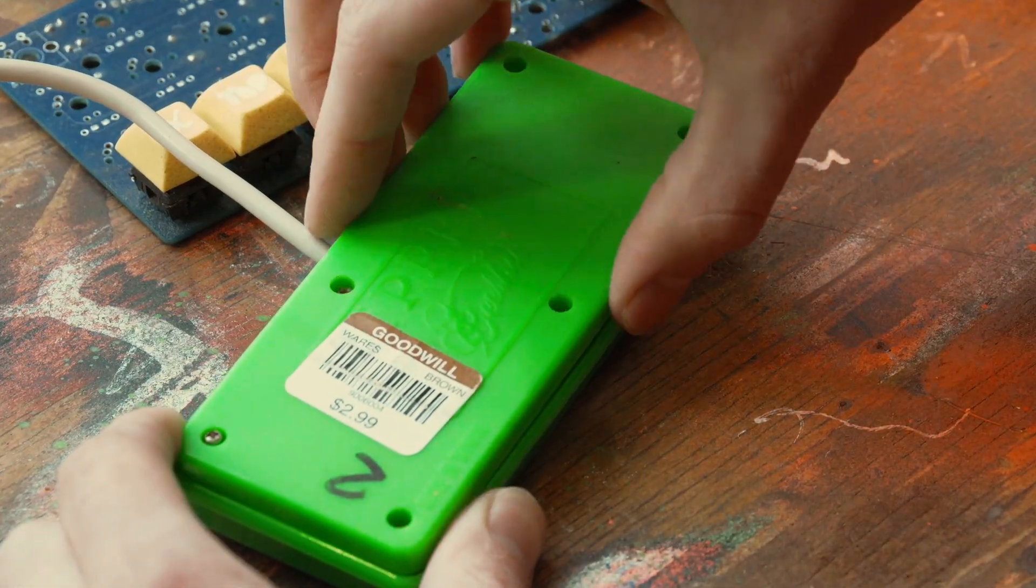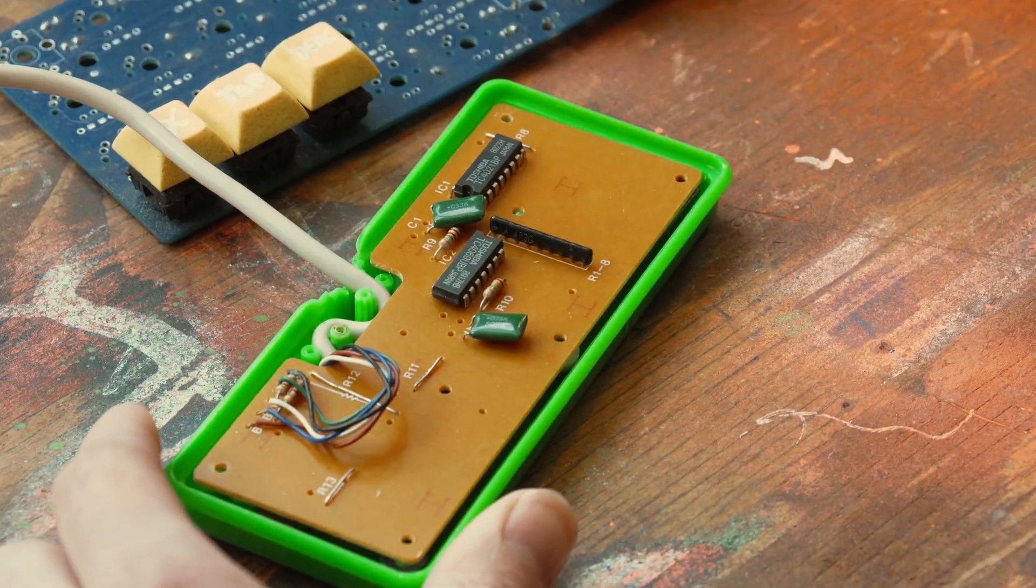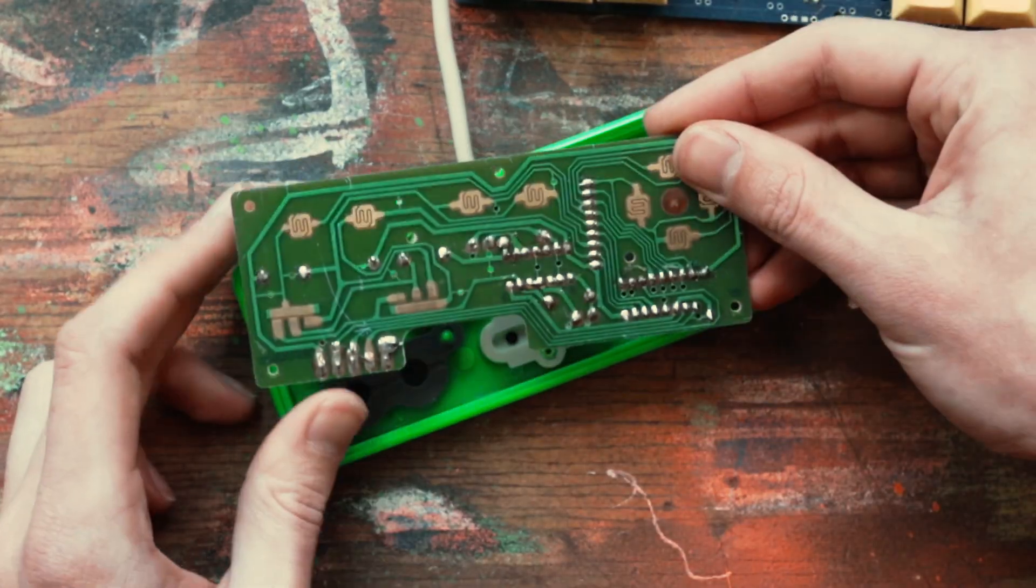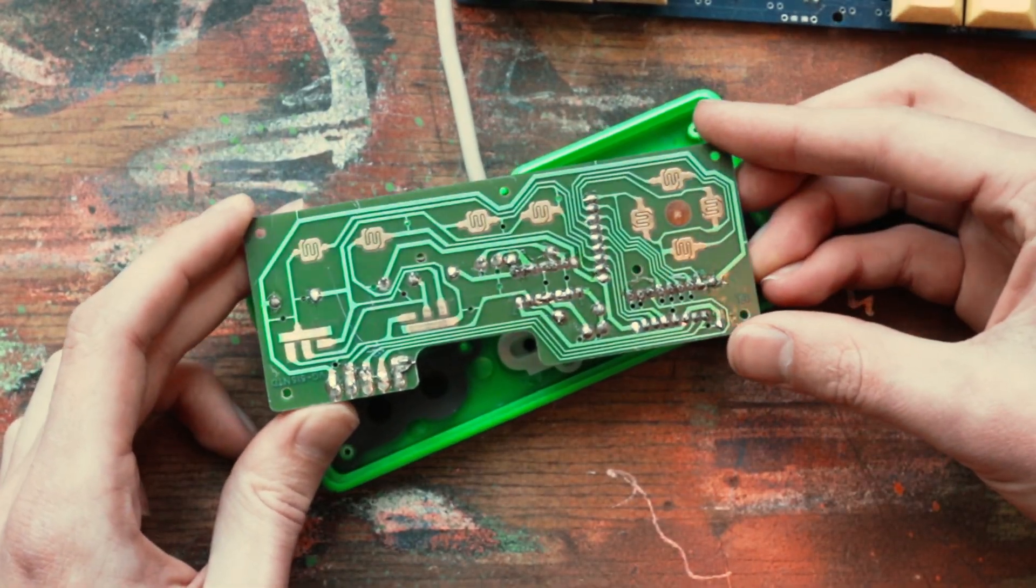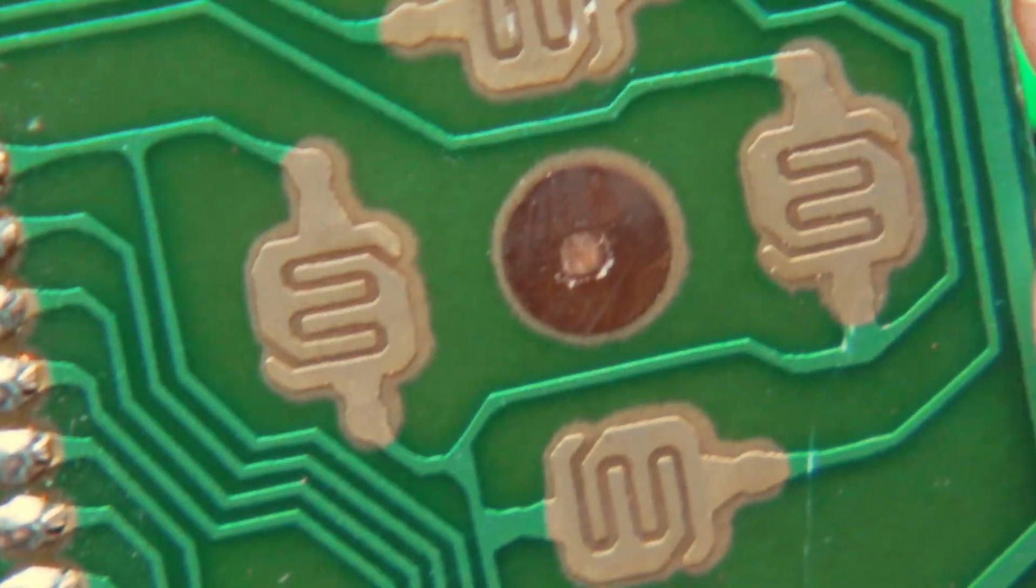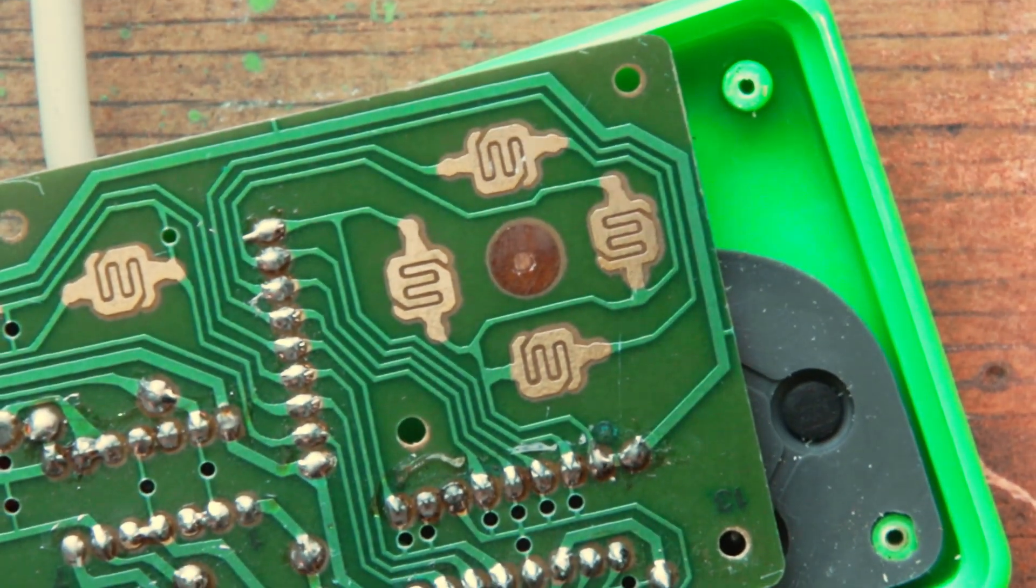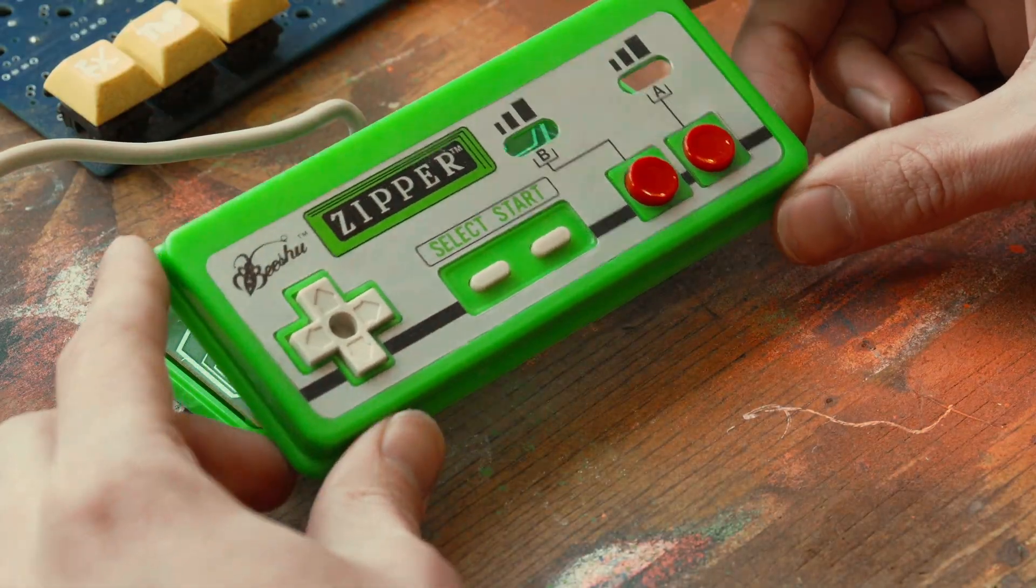The great thing about working on old electronics like this is how dead simple they are on the inside. My goal is basically to tap in my own wires to each of the individual buttons and send those to keys on the macro pad, which I can then program to camera controls or whatever I want.